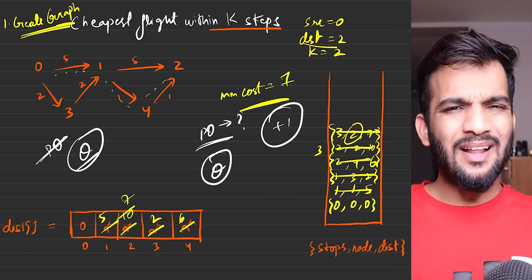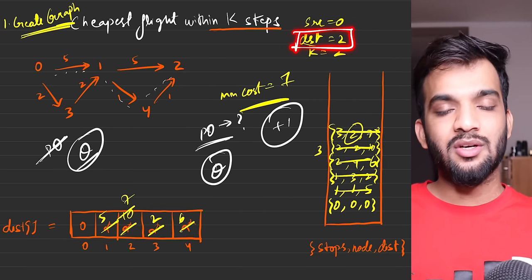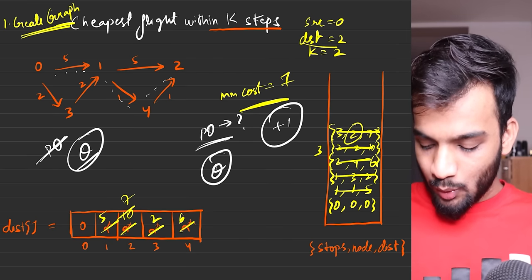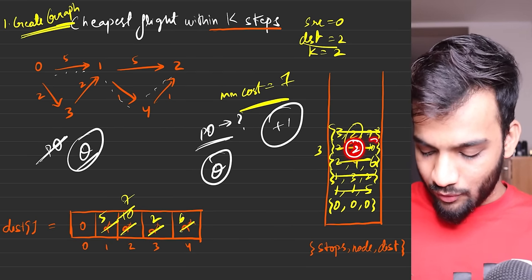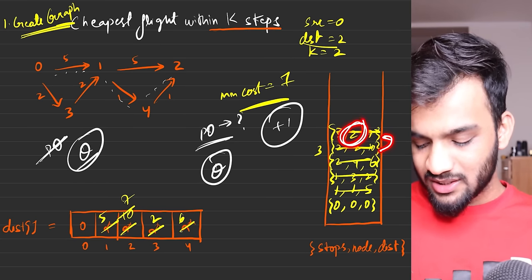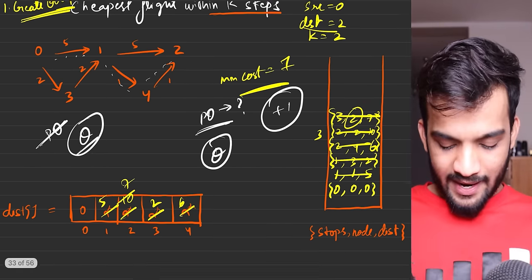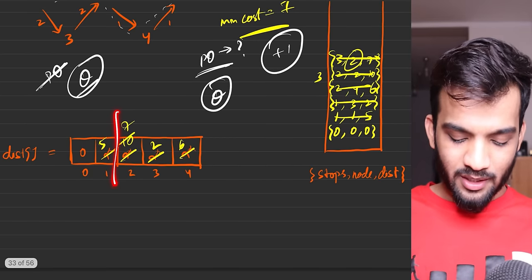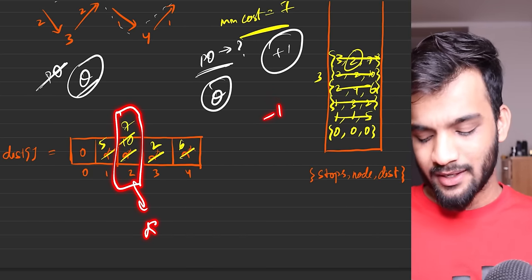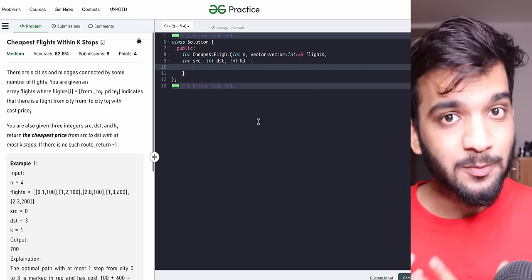One important thing before coding: whenever we reach the destination, do not stop the algorithm immediately. As we saw, we first reached destination at cost 10, but later found cost 7. Always continue and take the final answer from the distance array. If it's still infinity at the end, return -1.